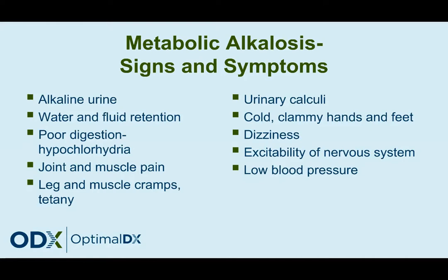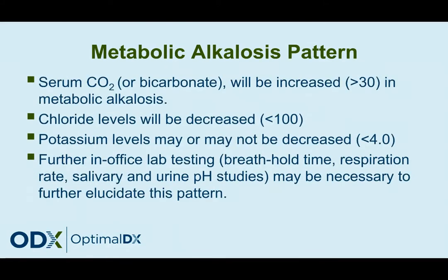What about the functional blood chemistry analysis pattern? You're going to see an increase in serum CO2 or bicarbonate — that alkaline element increased above 30 in metabolic alkalosis. Your chloride levels will be decreased below about 100. Potassium levels may or may not be decreased below 4. You might want to do some further in-office lab testing.